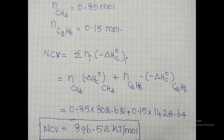Applying the formula for two components: NCV = (moles of CH4 × ΔHc° of CH4) + (moles of C2H6 × ΔHc° of C2H6). Substituting the known values of moles and standard heats of combustion, we find the net calorific value NCV = 896.52 kJ/mol.